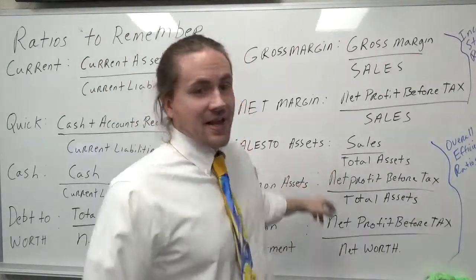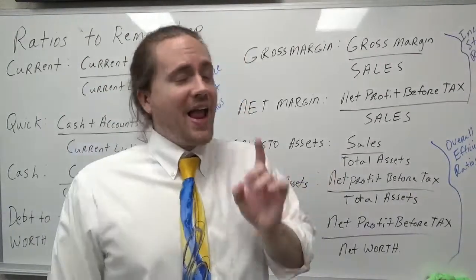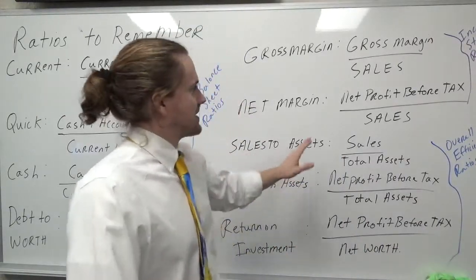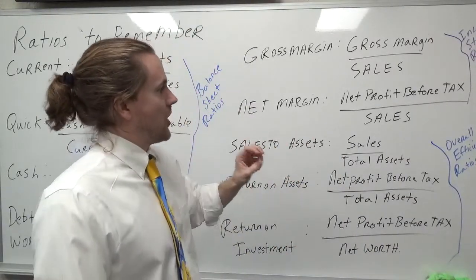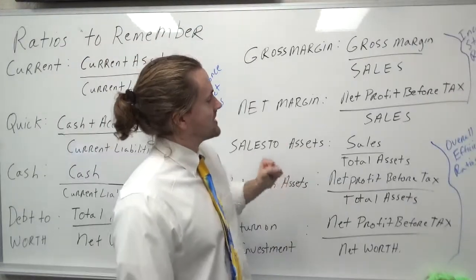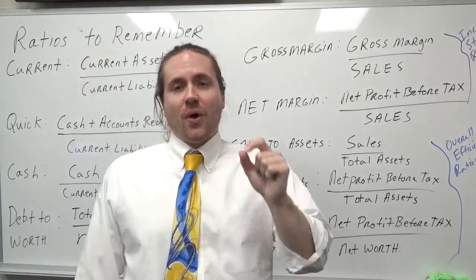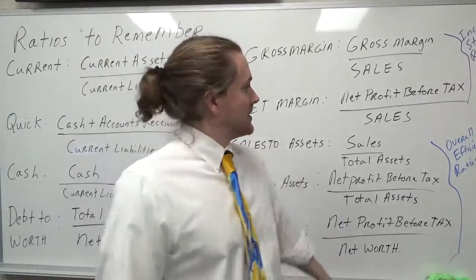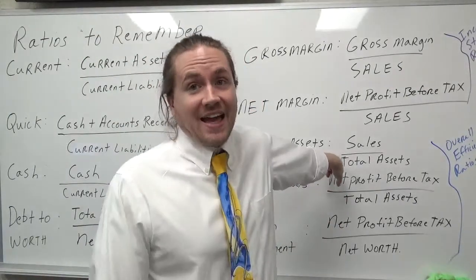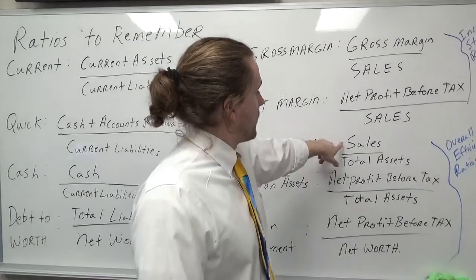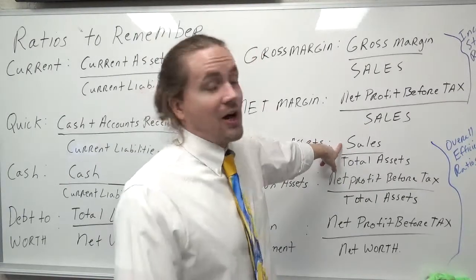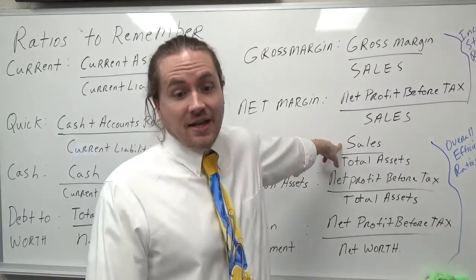For example, if I had a sales to assets ratio of 1.5, that would tell me that for every dollar that I have invested in assets, I'm going to generate $1.50 in sales.